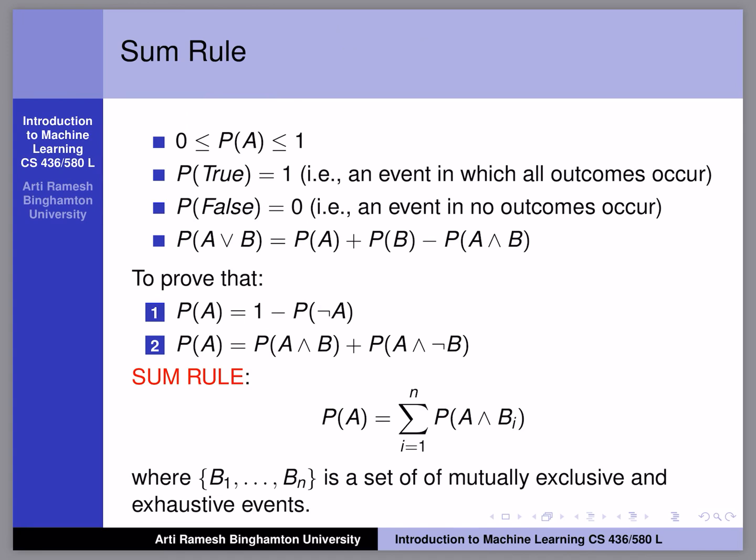If A occurs, not A does not occur, right? So from just the definition of how A and not A are supposed to be, they are mutually exclusive.